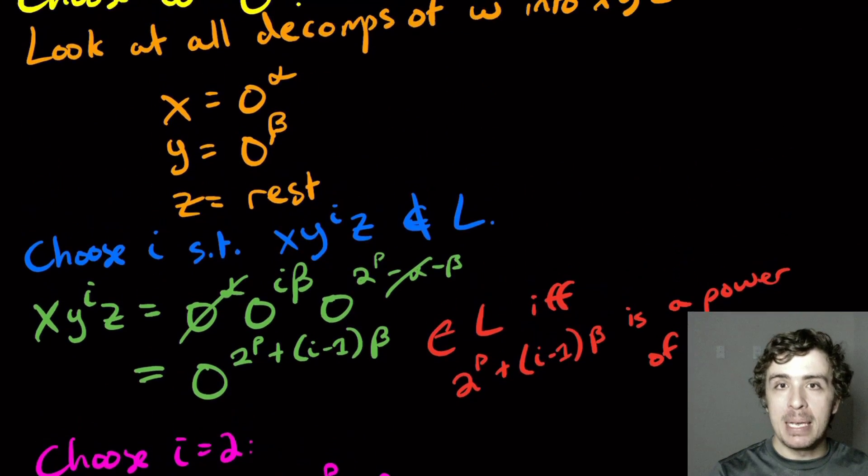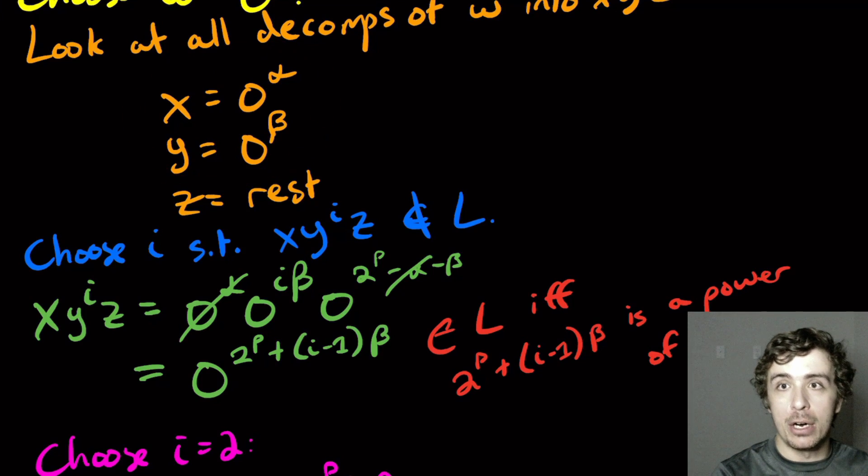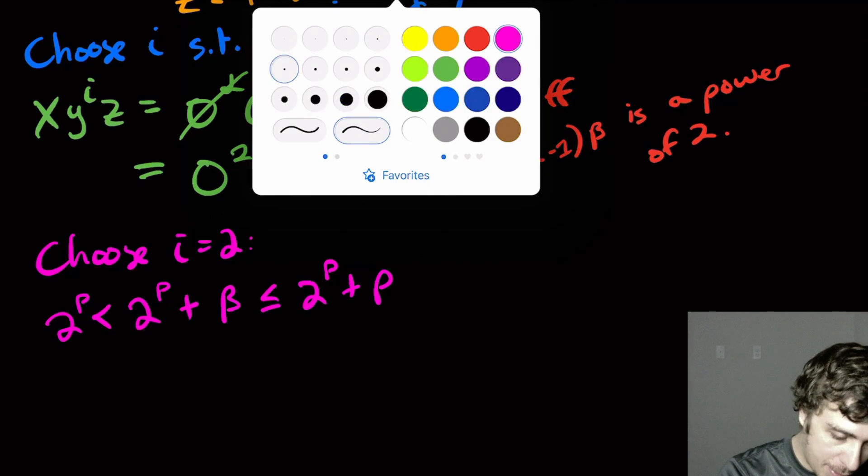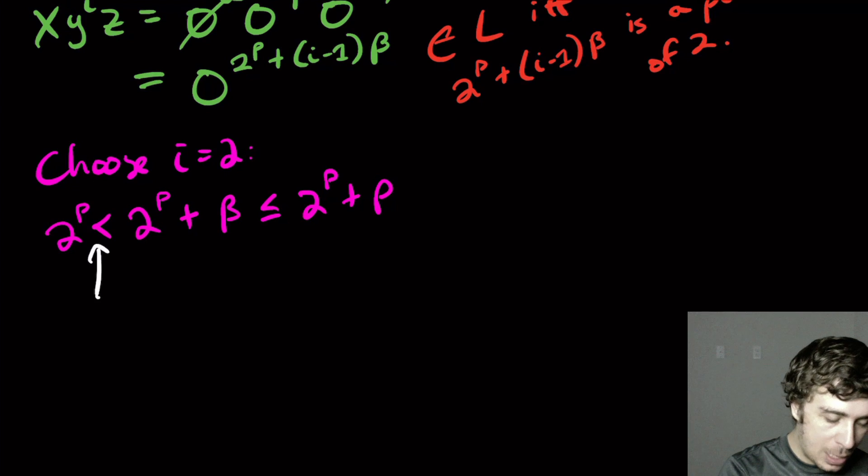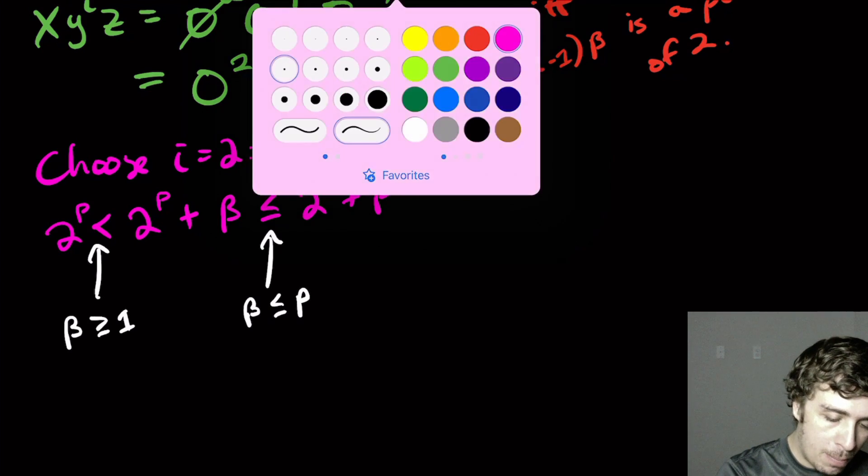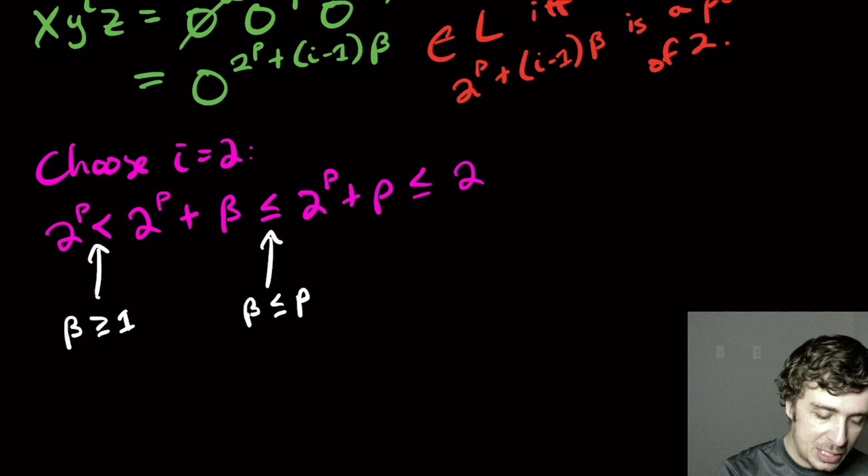And how do we know that? Because the X Y pieces together are of length at most P in total. And what we're asking is, what is the length of Y by itself? And that is at most P. So that's what we get here. So let me actually write where all this comes from. So that inequality comes from the fact that beta is at least one. That one comes from the fact that beta is at most P. And I'm going to do one more inequality, which is that this is at most two to the P plus two to the P. And we know that is true because P is always less than two to the P.